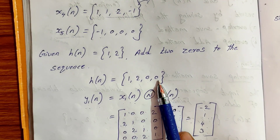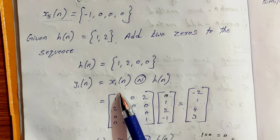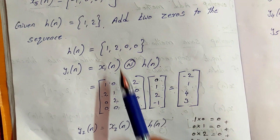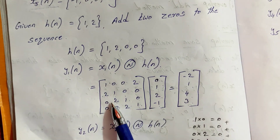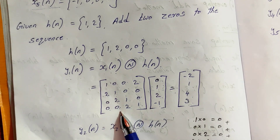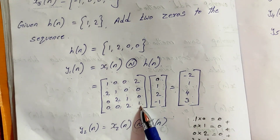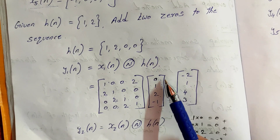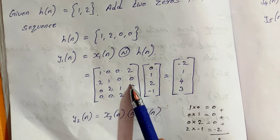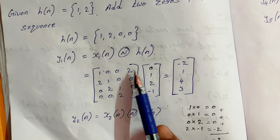For x1[n], the values are {1, 2, 0, 0}. We need to add h[n] to the back. Using the convolution method, x1[n] convolved with h[n] — h[n] is equal to {1, 2, 0, 0}. We perform row-wise and column-wise matrix multiplication: first row times this column, second row times this column, third row, fourth row.